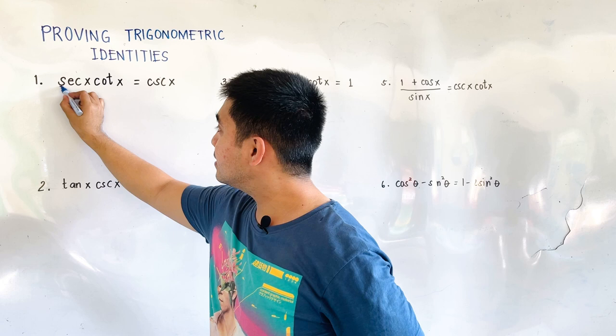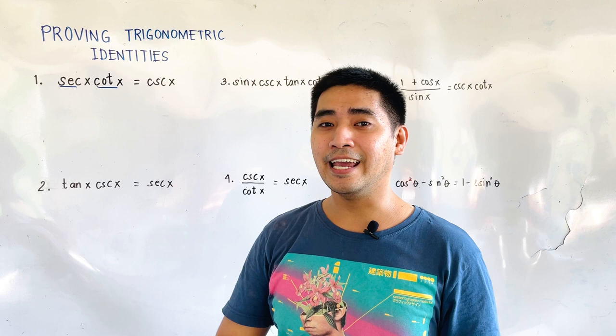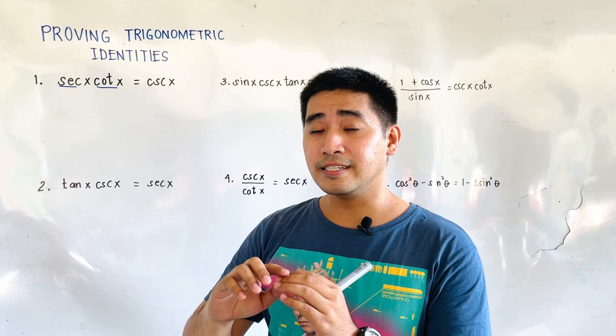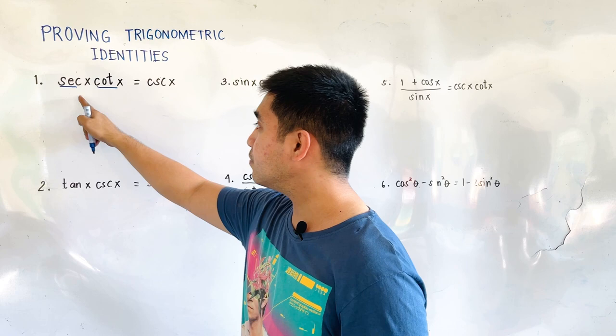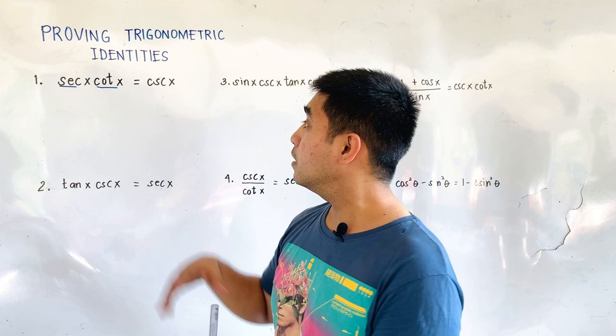We have here secant and cotangent. When proving trigonometric identities, we only need to choose which side we are going to manipulate. Remember to choose the side with the most terms. For example, the left side contains two terms and the right side only has one term. So in this case, we will be manipulating the left side since it contains two terms.